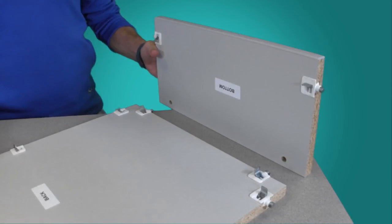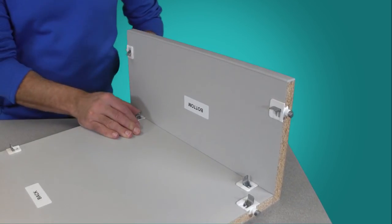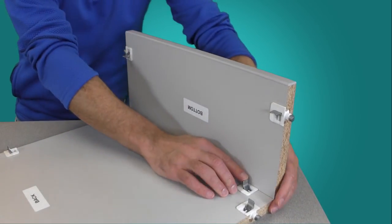Position the bottom panel to the bottom of the back panel aligning the pre-drilled holes with the fittings. Push the panels together then press the fitting toggles down to secure.